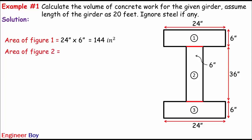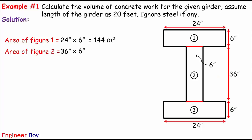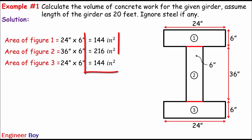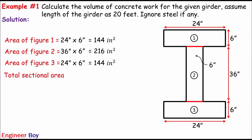The area of the second rectangle is 36 inches — the height — times the thickness or breadth, which is 6 inches. That gives us 216 square inches as the area of figure number two. And the area of figure number three is the same as figure number one: 24 times 6 equals 144 square inches. By adding these three areas, we get the total sectional area of the girder, which is 504 square inches.